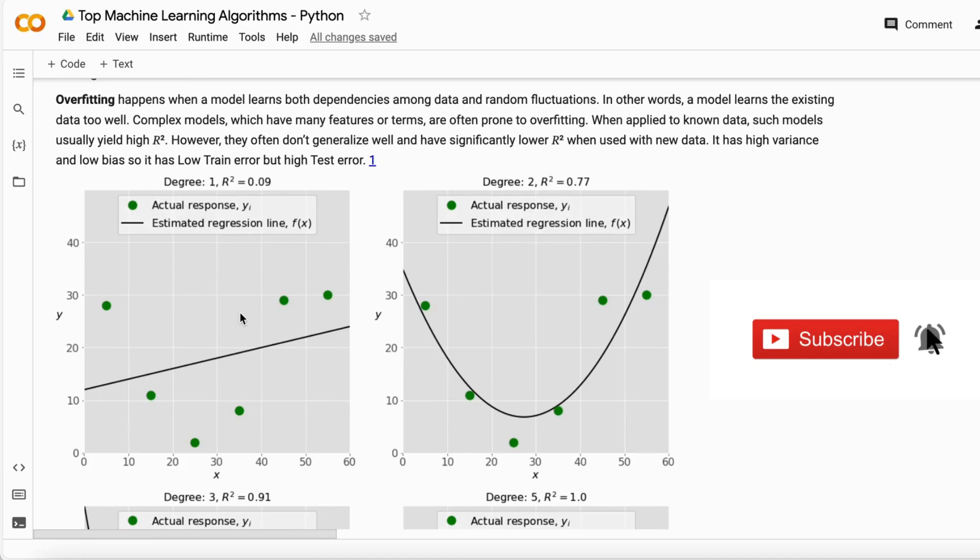When we have degree 1, it just builds a linear regression line. It gives the R-square value of 0.09, only nine percent accuracy is here. That is your underfitted model because your model does not capture all the dependencies here.